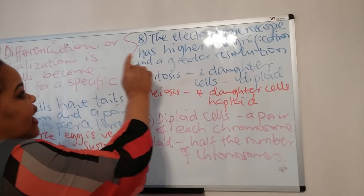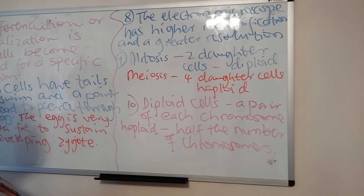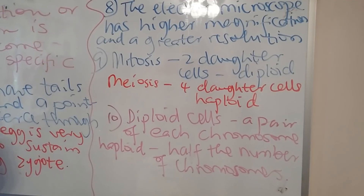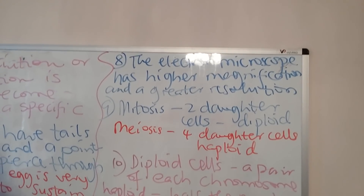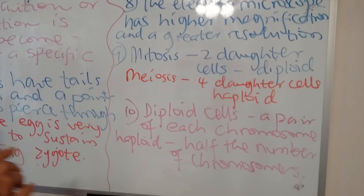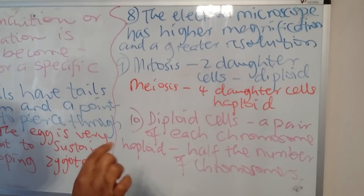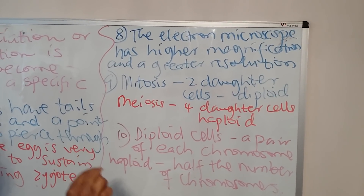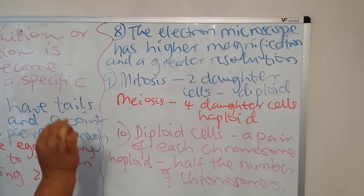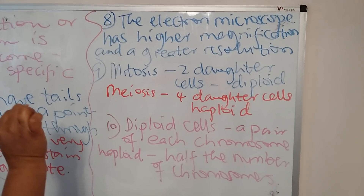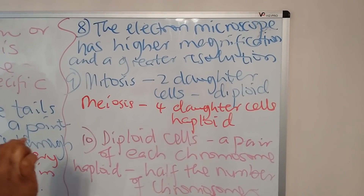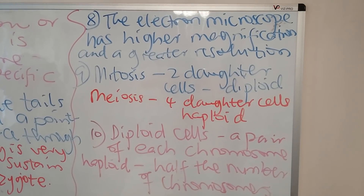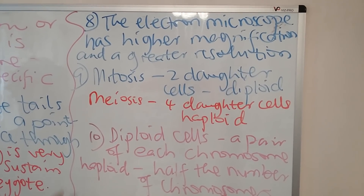Number eight: the electron microscope — in terms of how it is better than the light microscope — it has higher magnification and a greater resolution, which means it allows us to see the inside of cells in greater detail. So you can easily pick out the nucleus from the cytoplasm and pick out the other subcellular structures using an electron microscope.